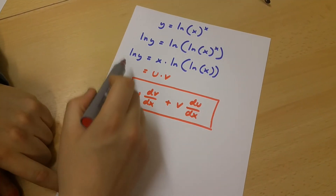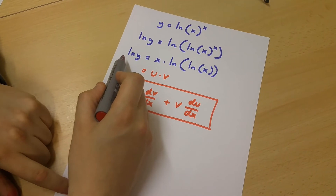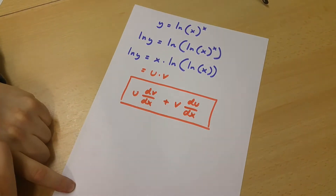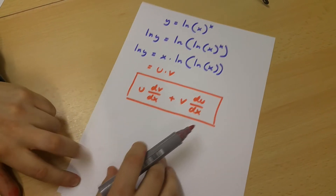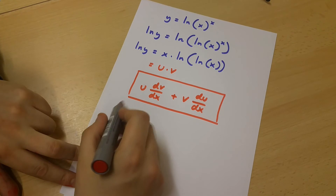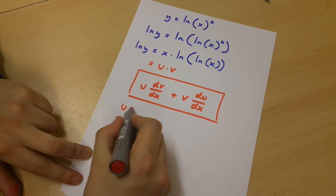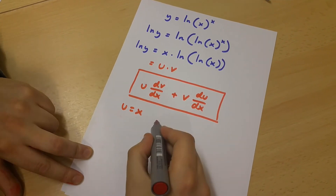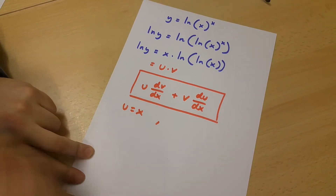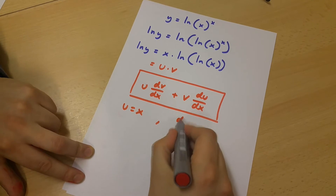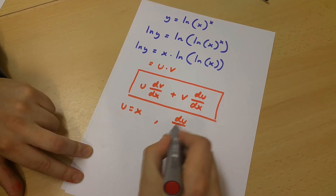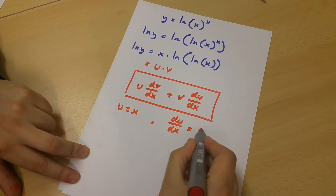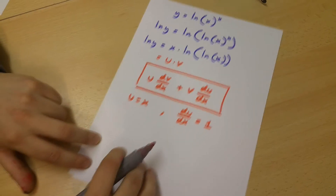Before we differentiate the whole equation, we are going to say that u is equal to x, and this means that du over dx is going to be equal to 1.